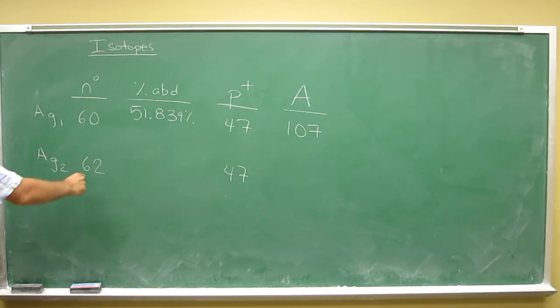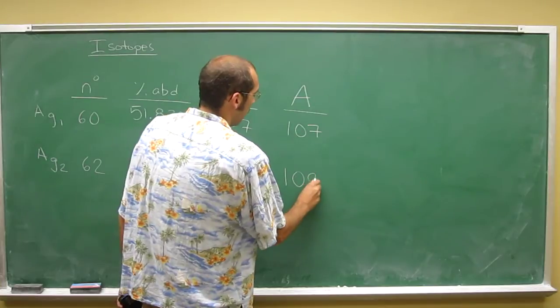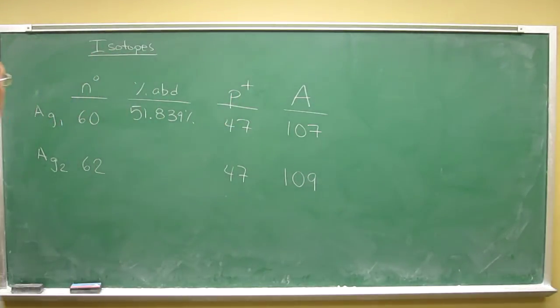And the bottom one, silver 2, the second isotope of silver, is going to be 62 plus 47, which is 109 Daltons, so that's the mass number of those two.